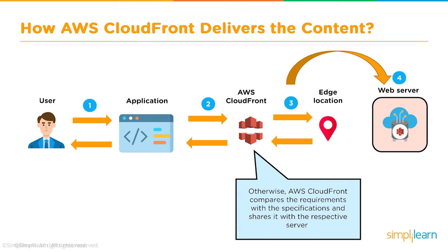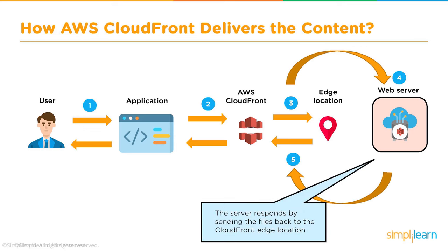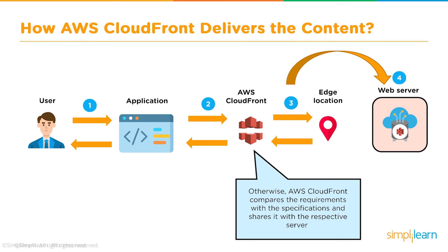Otherwise, if the file is not found in the cache memory of an edge location, AWS CloudFront compares the requirement with the specification and forwards it to the relevant web server where the file is actually available. The web server responds to the edge location by sending the file back to the CloudFront edge location. CloudFront then shares the file with the client and also adds the file to the edge location's cache for future reference.